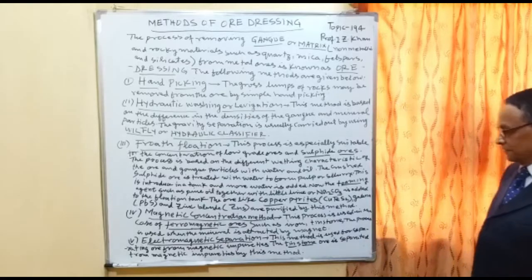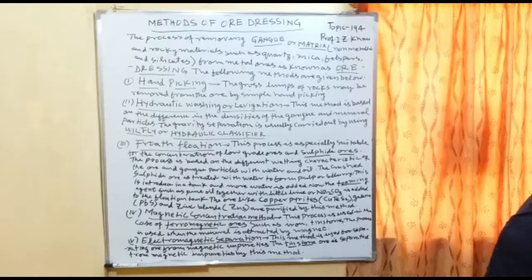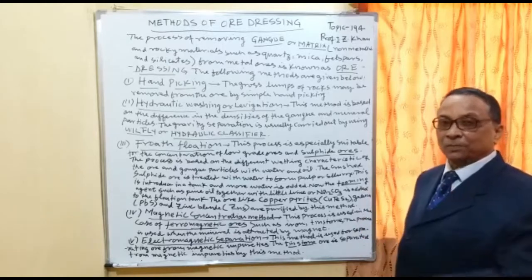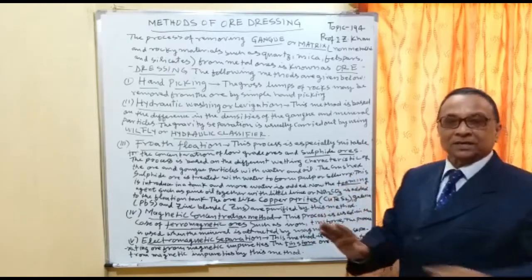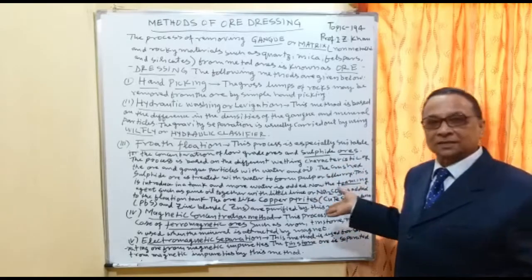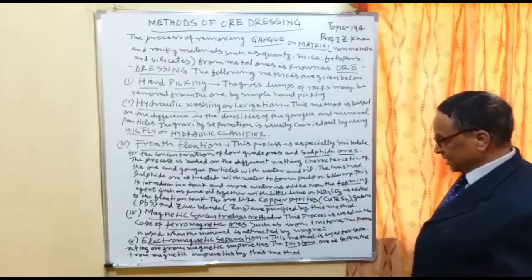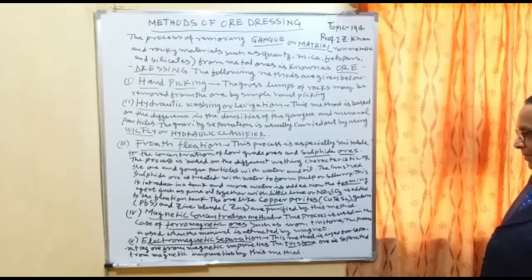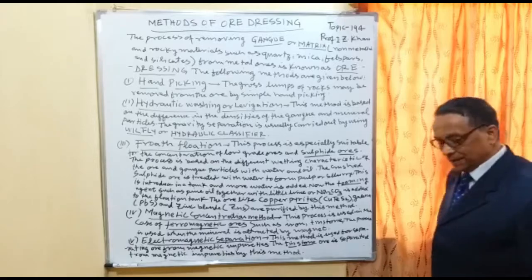Number four is the magnetic concentration method. This process is used in the case of ferromagnetic ores such as iron and tin stone. The process is used when the mineral is attracted by a magnet. Number five is electromagnetic separation: on a belt, a magnet is placed and the powder is allowed to move. The magnetically attracted particles come to the side where the roller is magnetic, and the others pass to the other side. This method is used for separating ore from magnetic impurities; tin stone ore is separated from magnetic impurities by this method.